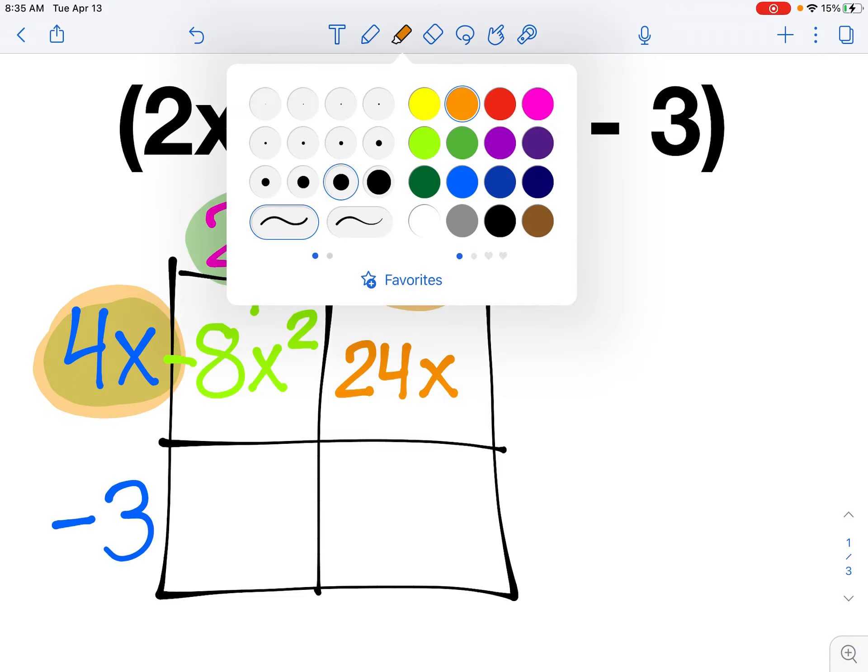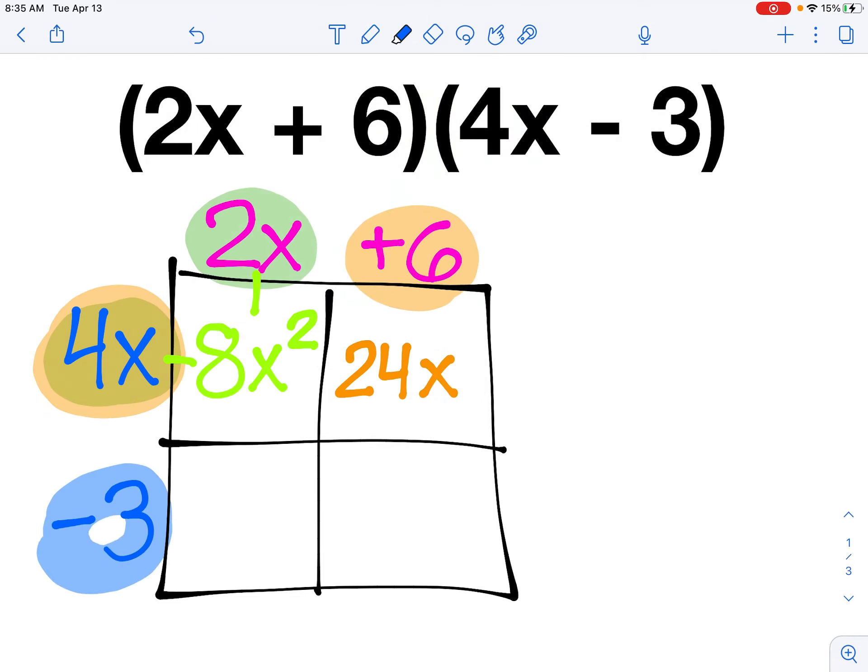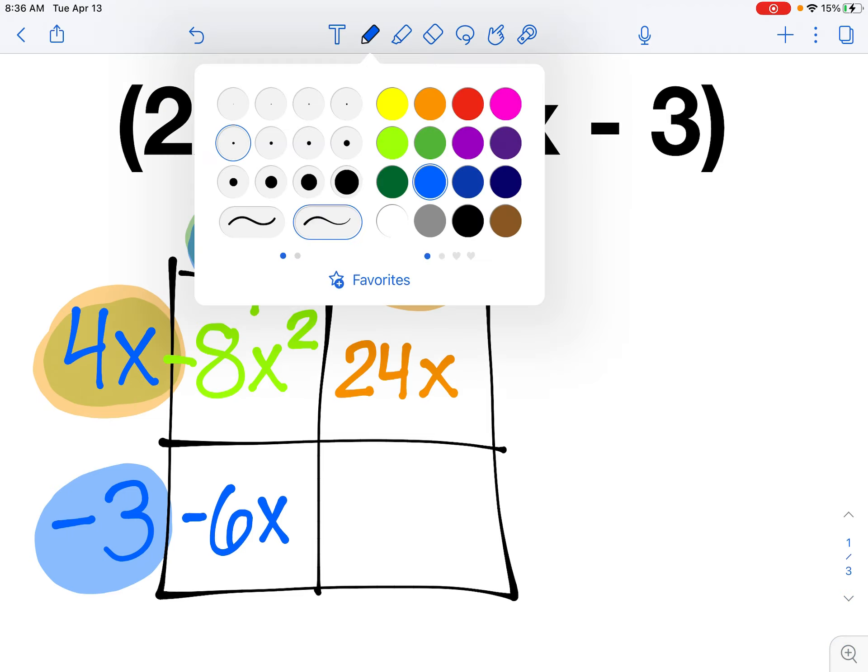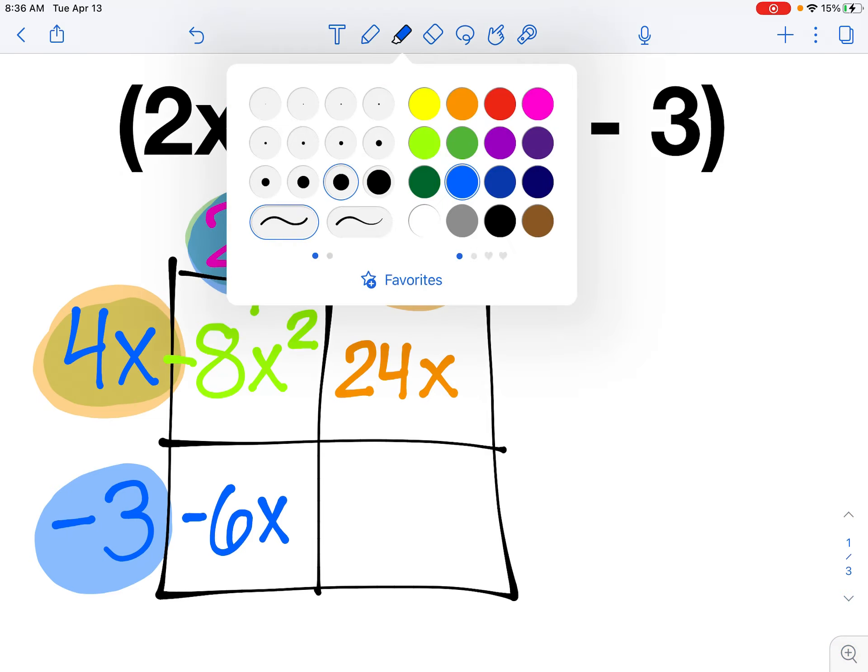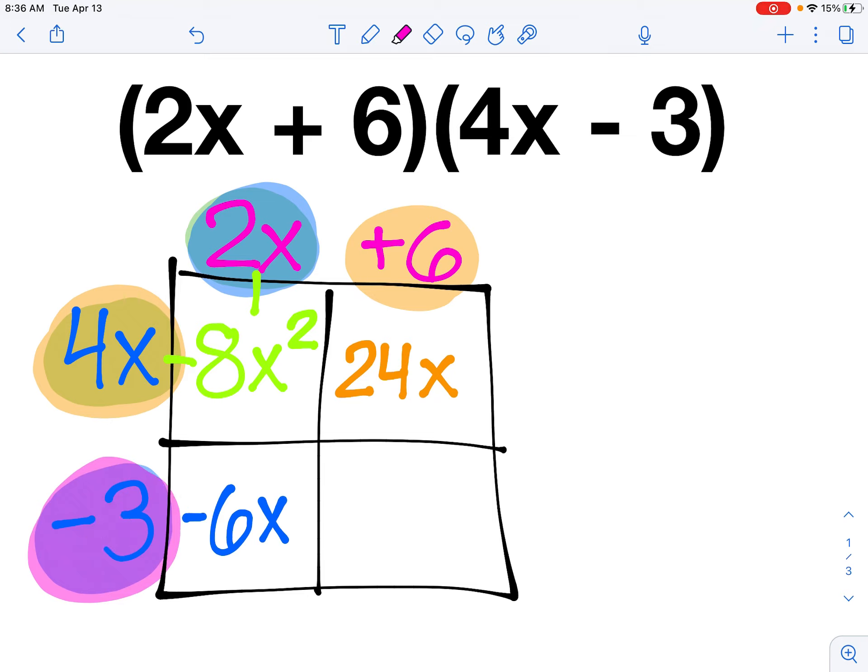Now I have multiplied my 4x by 2x and by the positive 6. I'm going to repeat the process down below. So this time I have negative 3 times 2x. Negative 3 times 2 would be negative 6. And since there's an x with a 2, it needs to be negative 6x. And finally, I'm going to finish it out with negative 3 times positive 6.